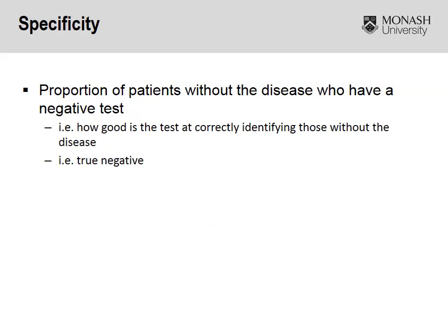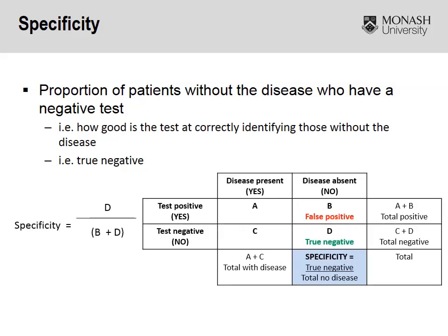On the other hand, we've got specificity. Specificity is looking at how good the diagnostic test is at correctly identifying those without the disease — essentially how effective it is at obtaining a true negative. In a hypothetical situation where we have a hundred people who don't have a particular disease, we run the test over them. Of all those that don't have the disease, how many actually come up negative on the test result? Obviously we want that to be as high as possible.